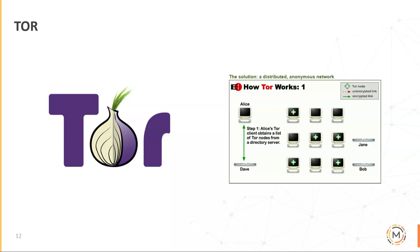Tor works by connecting you through three different nodes. Each node can only see one jump behind it and one jump in front of it. Your device connects to node one, which knows where the traffic originated and that it's going to node two, but doesn't know your destination. Node two knows it came from node one but not where it originated, and knows it's going to node three but not the destination. Node three only knows it came from node two and knows the destination, but doesn't know the origination at all.